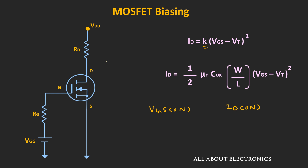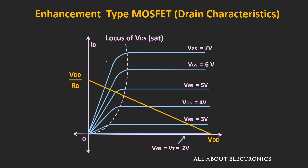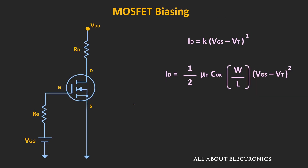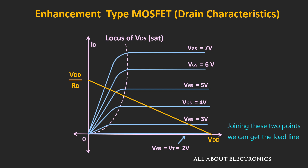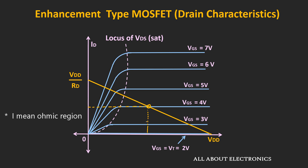The same can also be seen graphically. This yellow line shows the load line — whenever the voltage Vds is equal to zero, the drain current ID is equal to Vdd divided by Rd; and whenever ID is equal to zero, the voltage Vds is equal to Vdd. If the MOSFET is operated at Vgs equal to 4V, the intersection of this load line with the Vgs = 4V curve gives the operating point — this is the operating drain current and this is the operating value of the voltage Vds. If the value of Rd is too small or too large, the MOSFET may not operate properly in the saturation region and we may not get the full voltage swing of the output.